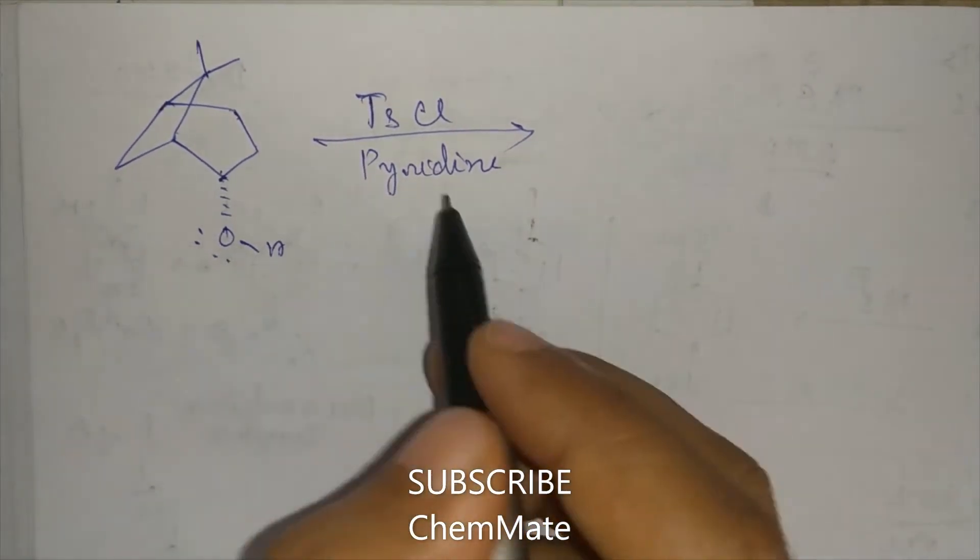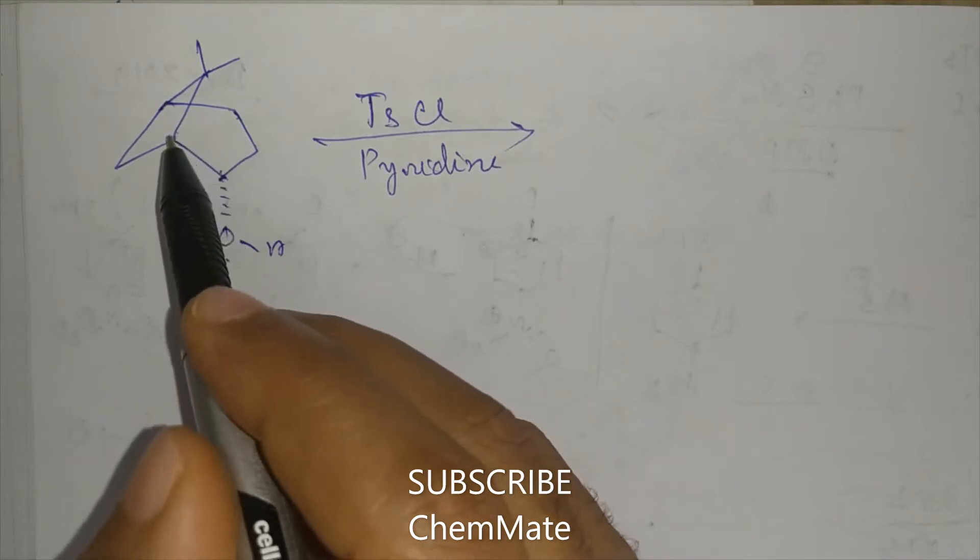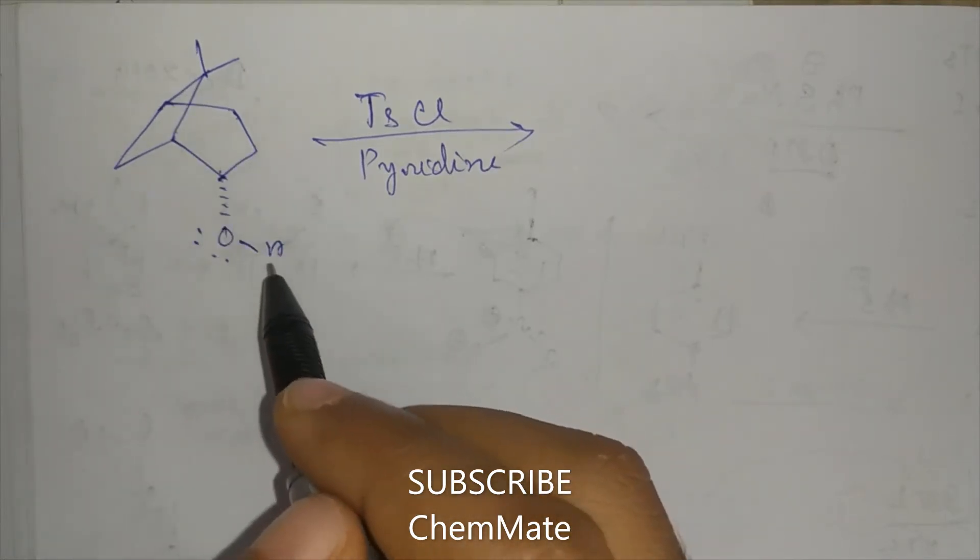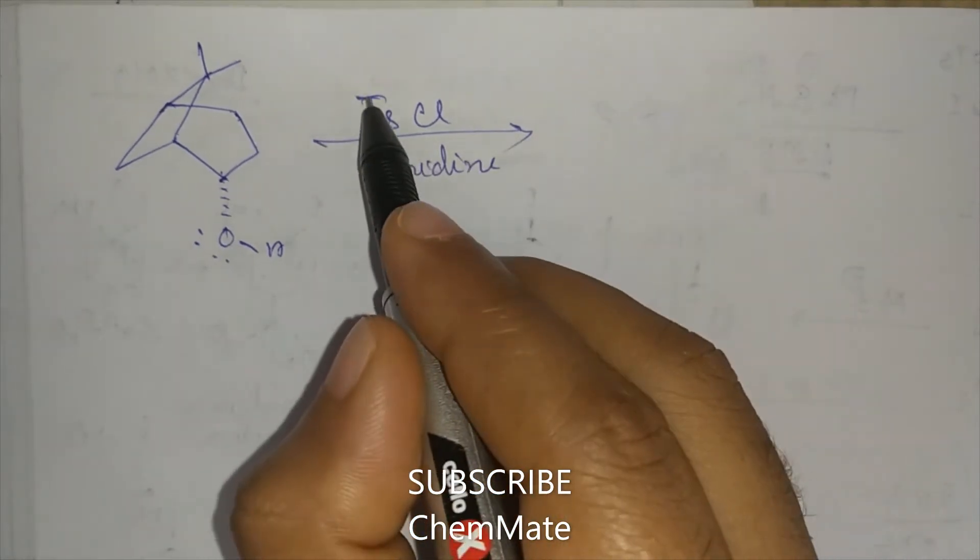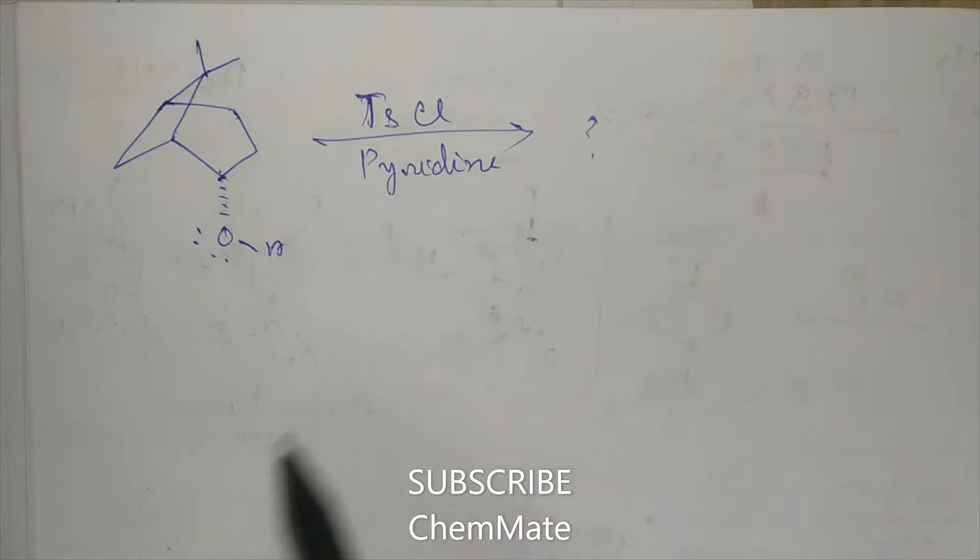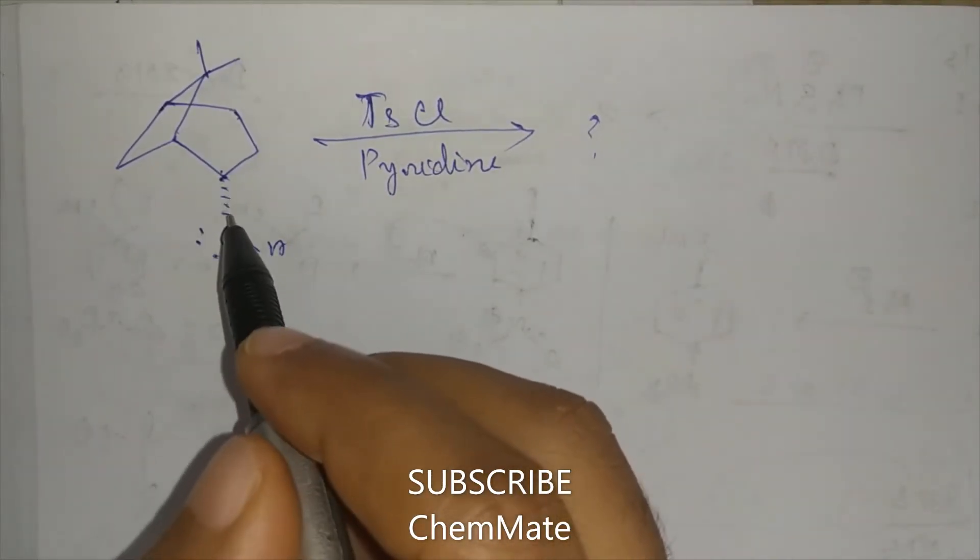Hi guys, how are you? Here is a very interesting question. If this bridged bicyclic system is treated with tosyl chloride in presence of a base, then what will be the product? So here an OH group is there.